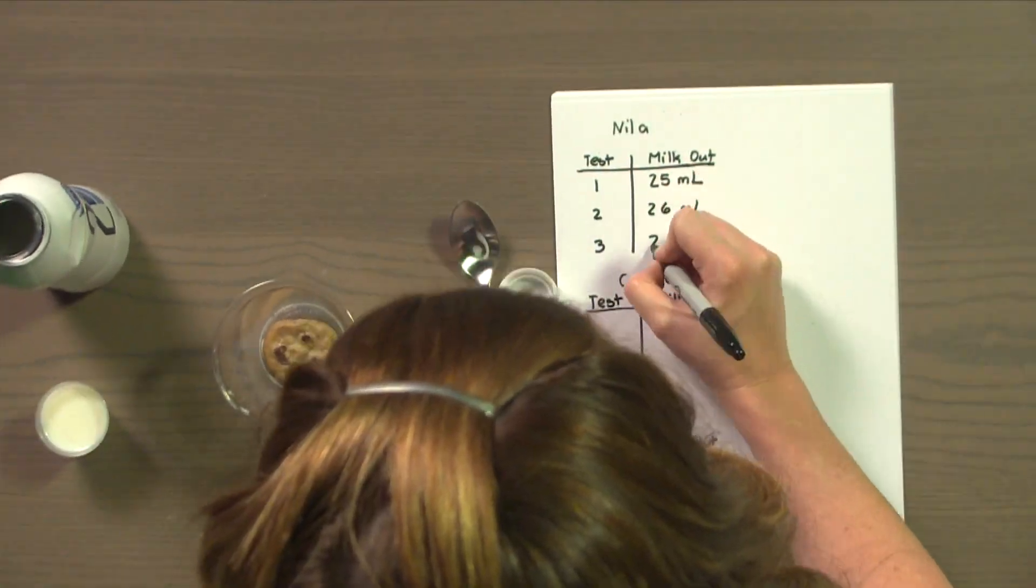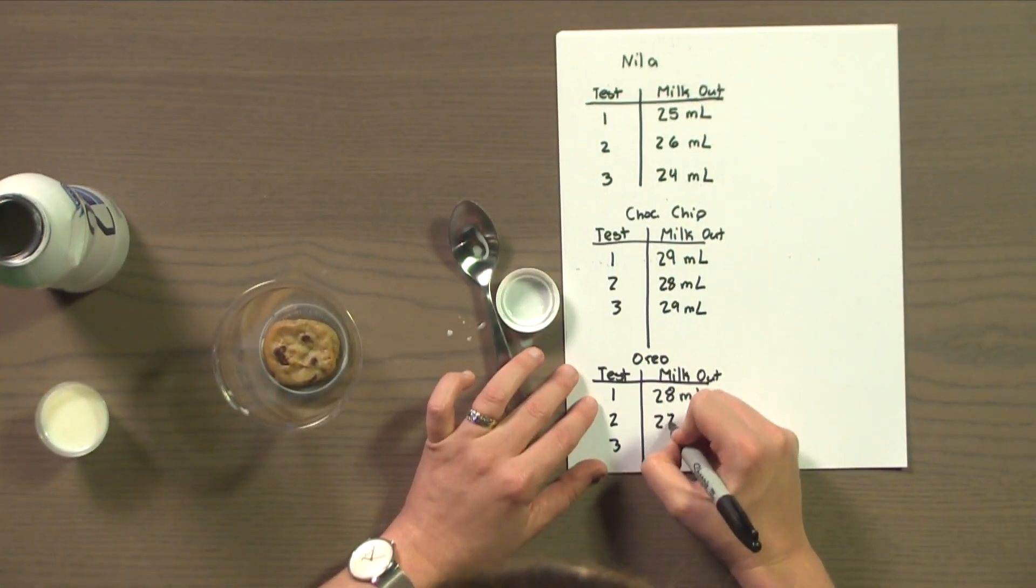So, are we done with the test? Raise your hand if you think we still have more to do before we know for sure which cookie soaks up the most milk. Right. We still need to test each cookie two more times. That way we can make sure our results are accurate. Now, through the magic of television, we're going to fast forward to the end of the fair test.